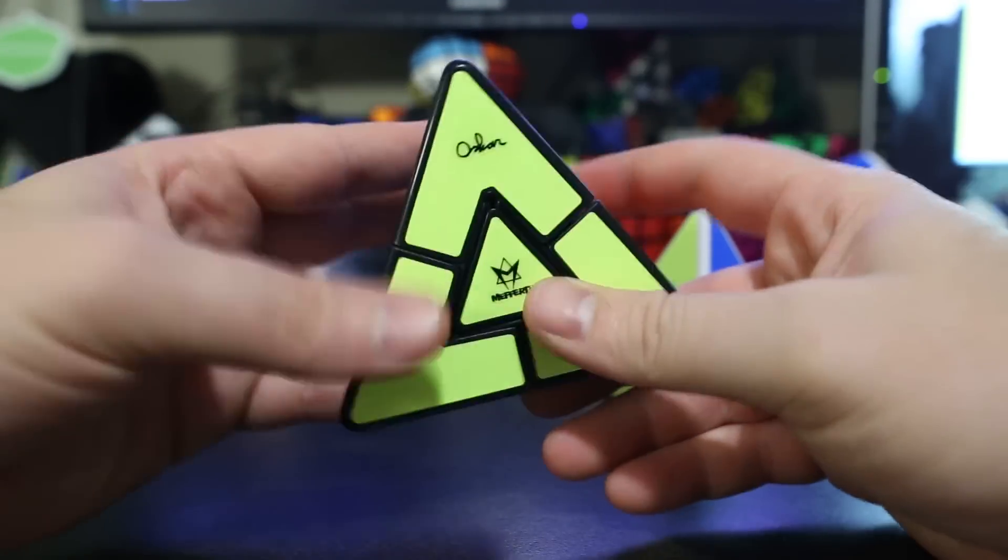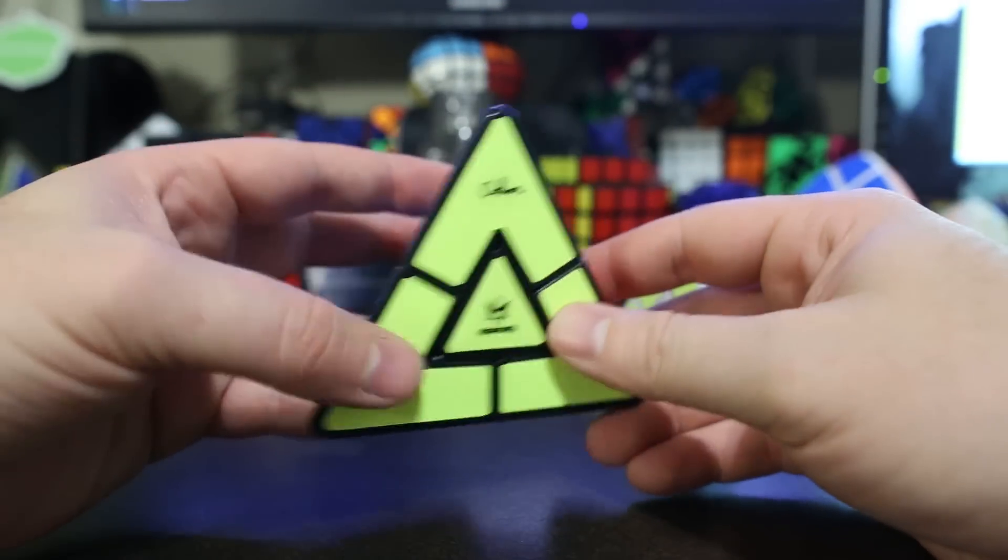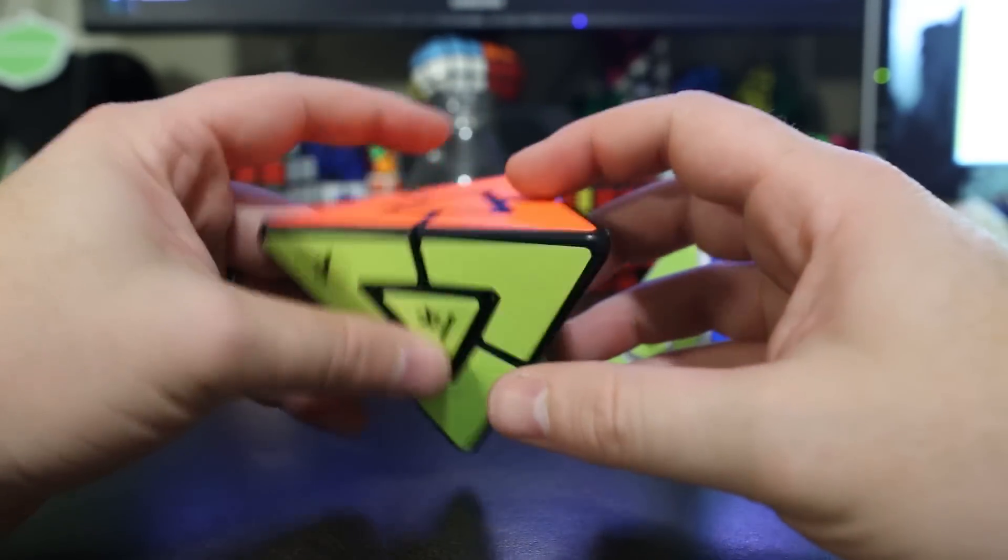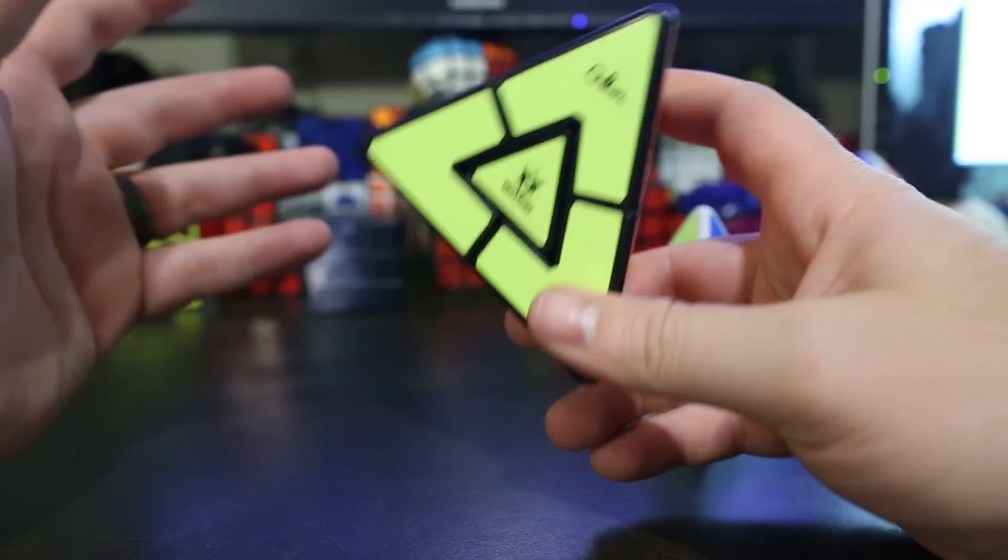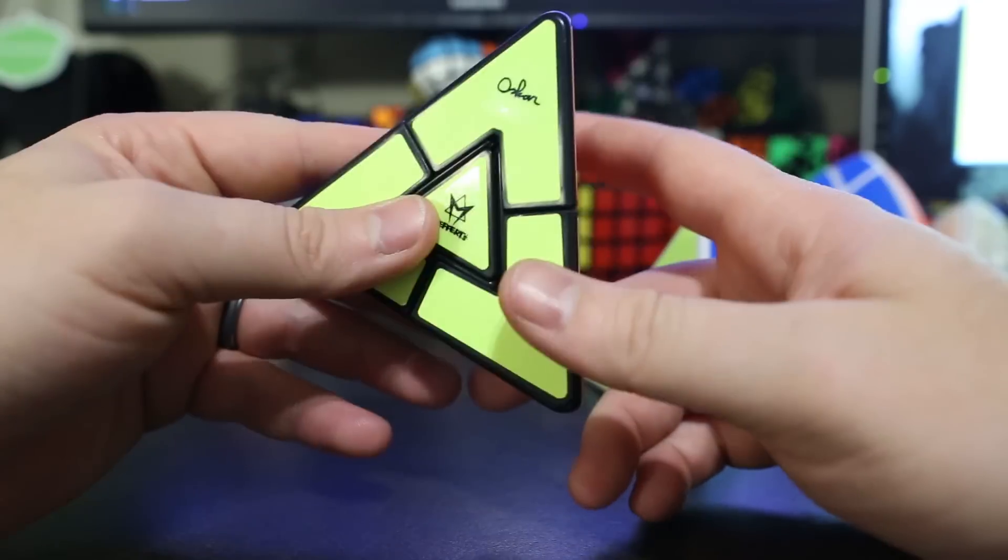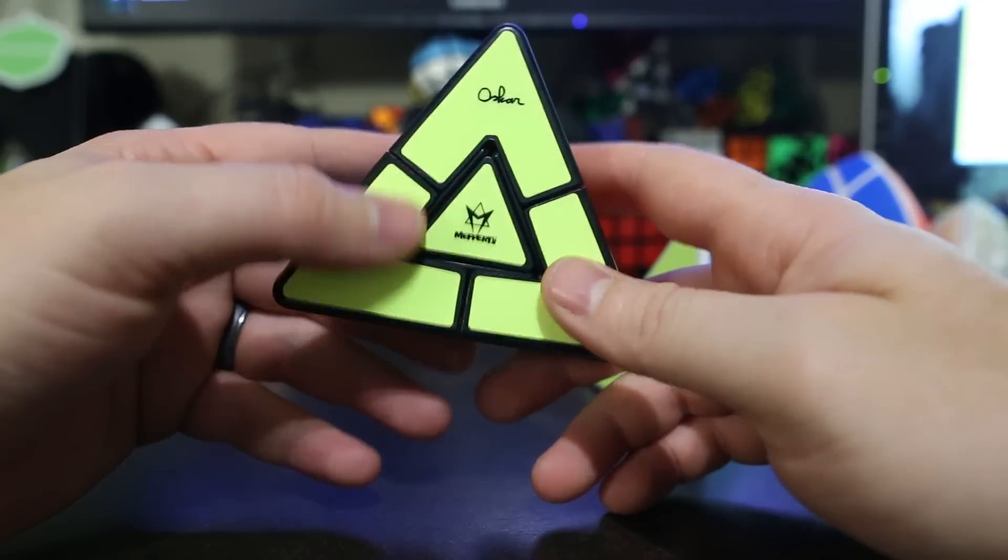So here's the puzzle, it's a Pyraminx Duo and this is the brand new puzzle by mefferts.com. This was designed by Oscar Van Deventer, but it was originally suggested by Rob Stegman, and that's why Oscar called it Rob's Pyraminx.